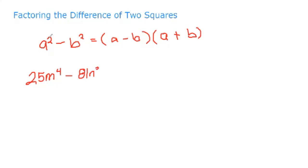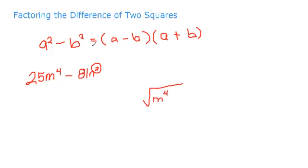We can see that m is raised to the 4th power, and even though it's not squared directly, we can still work with it because we can take the square root. The square root of m raised to 4 is m squared.